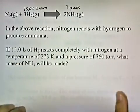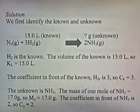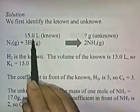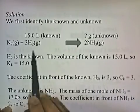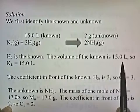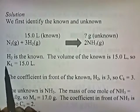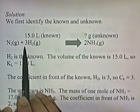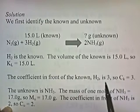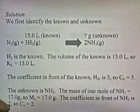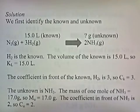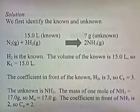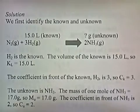H2 is the known. The volume of the known is 15 liters, so KL equals 15. The coefficient in front of the known H2 is 3, so CK equals 3. The unknown is NH3. The molar mass of NH3 is 17 grams per mole, so MU equals 17. The coefficient in front of NH3 is 2, so CU equals 2.